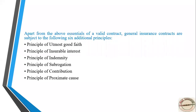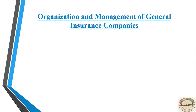In the previous class we discussed the six principles of insurance in detail. In today's class we will move further to the regulation of insurance. For each company or corporation there is one management body which controls it — for example, RBI controls banks and SEBI controls the stock market. Similarly, for general insurance also we have management bodies.